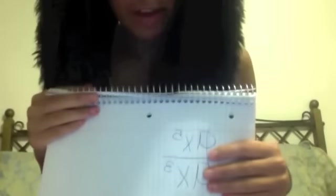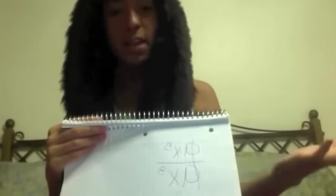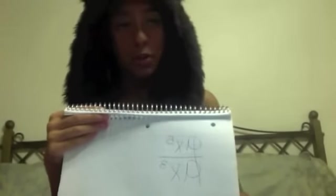Now we're going to do another one that's a bit different. It is 9x to the 5th over 9x to the 3rd. You cross out the 9s because they're both the same. For the x's, they have different exponents — so what do you do? You subtract them. 5 minus 3 leaves you with x to the 2nd. That is your final answer.